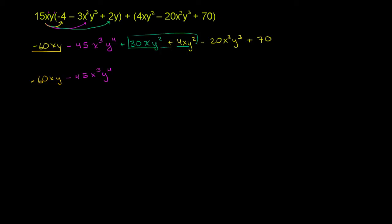Just the coefficient is different. They're both something multiplied by xy squared. So we can add the somethings. 30 plus 4 gives us 34xy squareds.